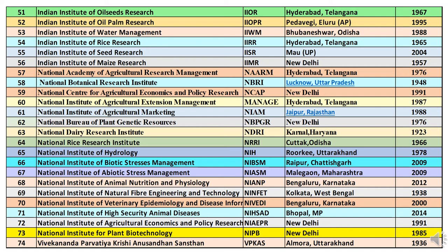Next is IIWM — Indian Institute of Water Management — headquartered at Bhubaneswar, Odisha, started in 1988. Next is IIRR — Indian Institute of Rice Research — headquartered at Hyderabad, Telangana, established in 1965. Next is IISR — Indian Institute of Seeds Research — headquartered at MAU, Uttar Pradesh, started in 2004. Next is IIMR — Indian Institute of Maize Research — headquartered at New Delhi, established in 1957. Next is NAARM — National Academy of Agricultural Research Management — headquartered at Hyderabad, Telangana, started in 1976. Next is NBRI — National Botanical Research Institute — headquartered at Lucknow, Uttar Pradesh, established in 1948.